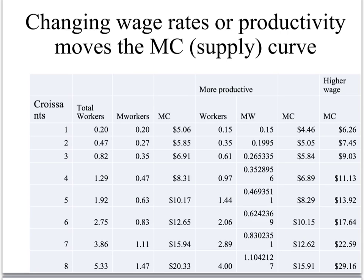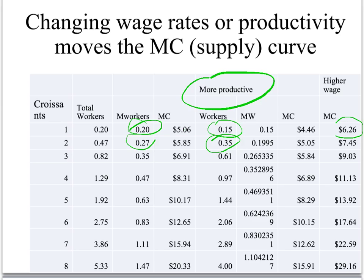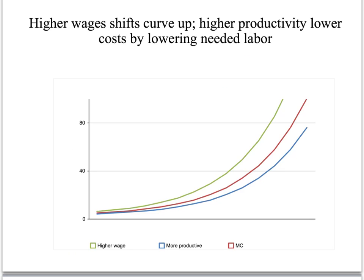What happens when you change the wage rates? If wages go up, workers are more expensive and the marginal cost is higher. What if you make workers more productive? Suddenly you don't need as many workers — 0.15 workers instead of 0.2, 0.35 instead of 0.47, 0.61 instead of 0.82. So the marginal workers are less, and the marginal cost is less if your workers are more productive. Higher wages shifts the marginal cost curve up — higher prices for every croissant you're willing to make. More productivity shifts your curve down — you'll make more croissants at any price.